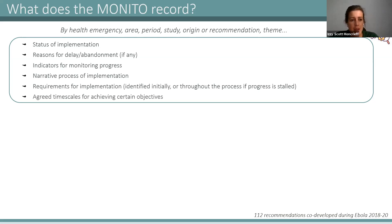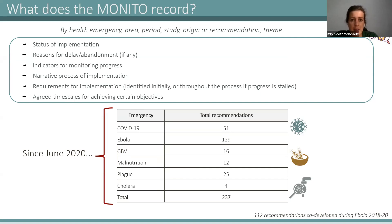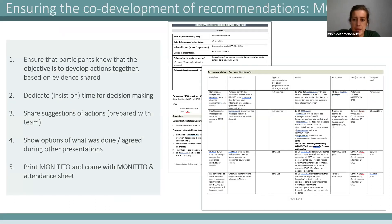Since June 2020, we're currently working on COVID, Ebola, sexual violence, malnutrition, plague, and cholera — with a total of 237 recommendations. Some have already been implemented; most we're monitoring progress on. During the Ebola response from 2018 to 2020, we co-developed 112 recommendations in total.